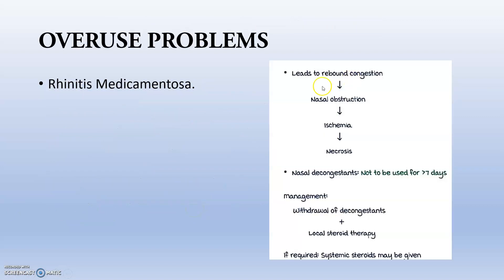What is the overuse problem? That is rhinitis medicamentosa — it leads to rebound congestion, nasal obstruction, ischemia, and necrosis. The main fact is that nasal decongestants should not be used for more than 7 days. If you have used it for more than 7 days and develop a necrosis problem, withdrawal of the decongestant should be done and you should start local steroid therapy.